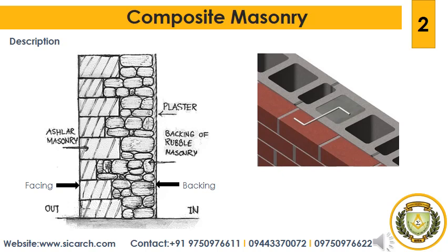The two main terms used in composite masonry are facing and backing. Facing is the part of the masonry that is visible on the outside for aesthetic purposes. Backing is generally not given much importance as it is not visible to the human eye, being well hidden.